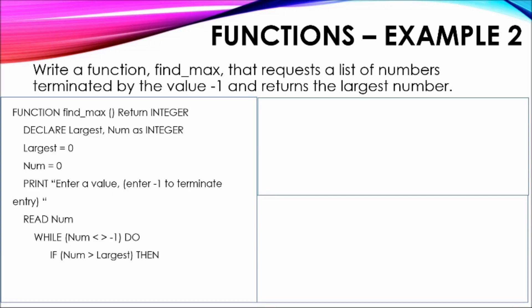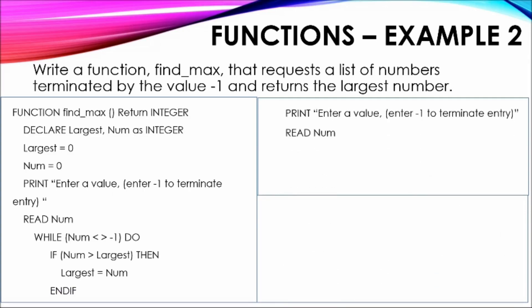If the value is not -1, an IF statement evaluates whether the value entered is greater than the value stored in largest. This will be true for the first iteration because largest was initially assigned zero. Largest is then assigned the value stored in num. Another prompt and input statement accept a new value, which is re-evaluated to determine whether it equals -1. If not, the process repeats; otherwise the loop terminates using the END WHILE keyword. The last value stored in largest is then returned by the function.